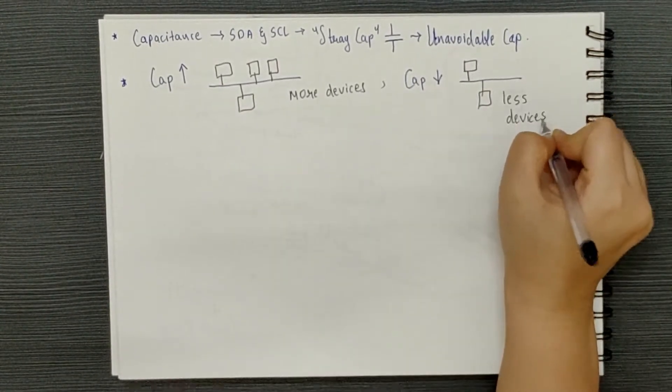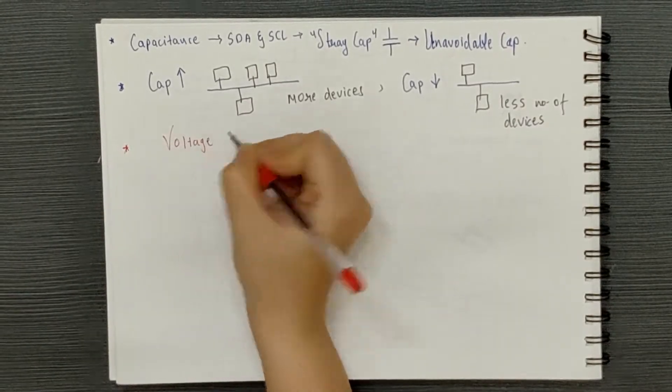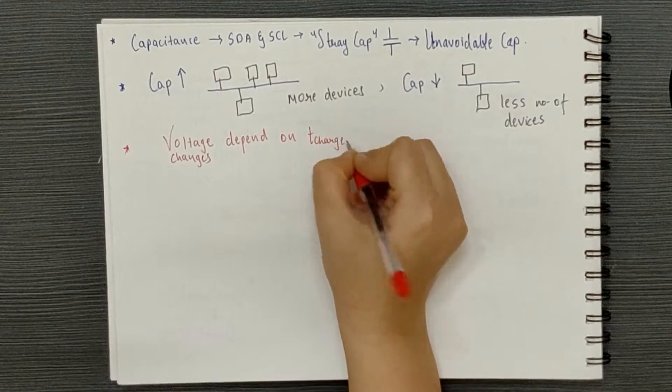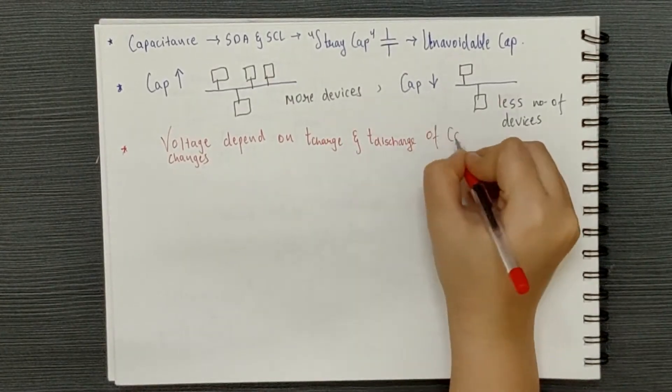Nevertheless, the point is that the voltage changes on the lines are constrained by the time required to charge or discharge the capacitance associated with a particular node.